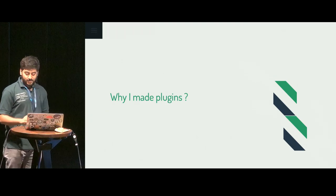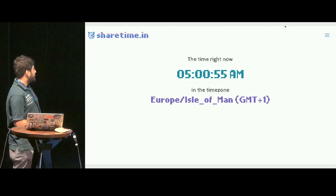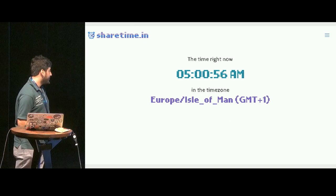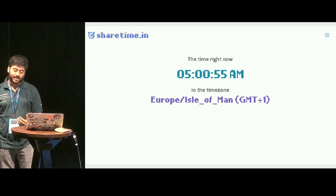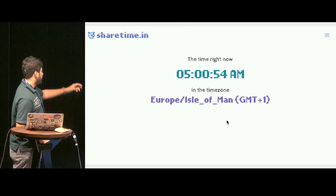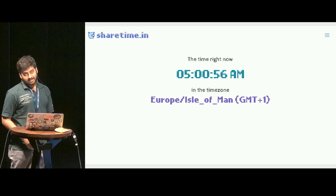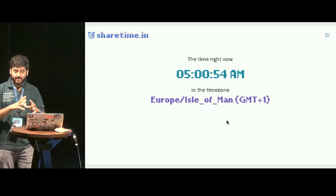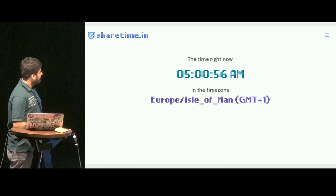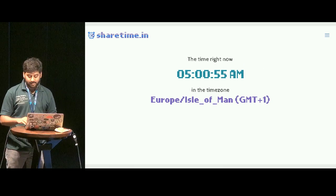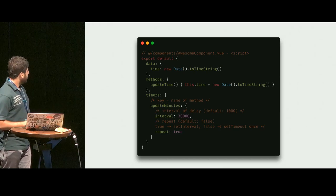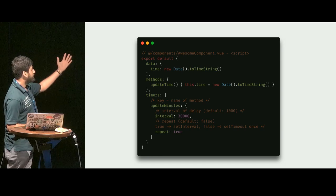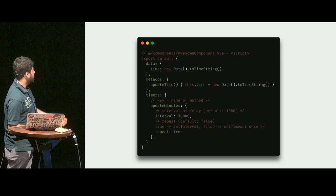Let me show you a sample of a side project I built. It's a website called sharetime.in — it helps me schedule meetings with people in different time zones. I needed a component that would update itself every second, like a timer, and I needed it in a lot of places inside that website. So I built something like this. You have a time object in the data, a method called update time, and something called timers.